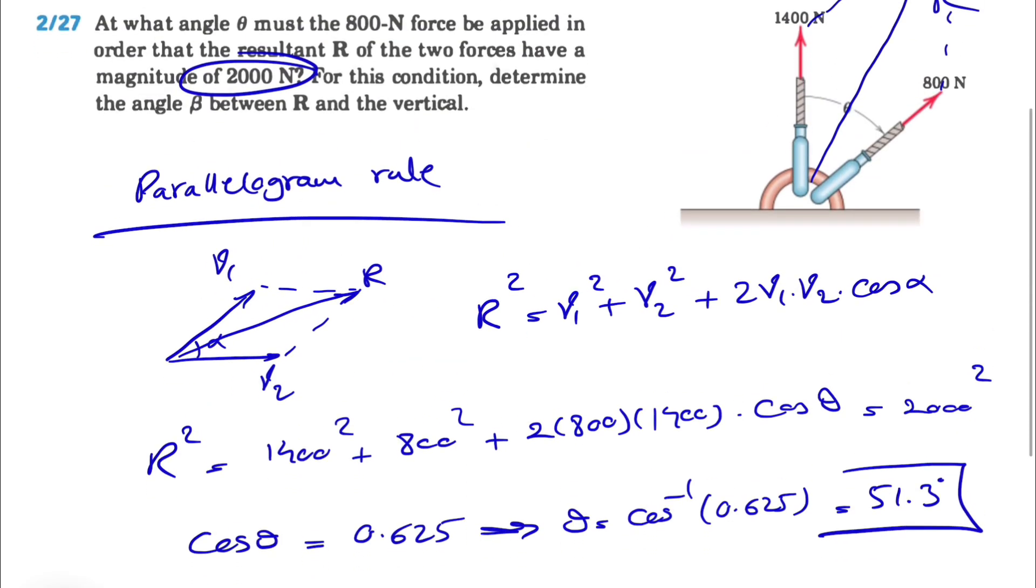Now that we have this, it's easy enough to find the resultant components. Let's call this our x and y. We can see that the only x component we have is from the 800 newton force. That would be Rx, and Ry would be the y component from both. So let's find Rx and Ry.